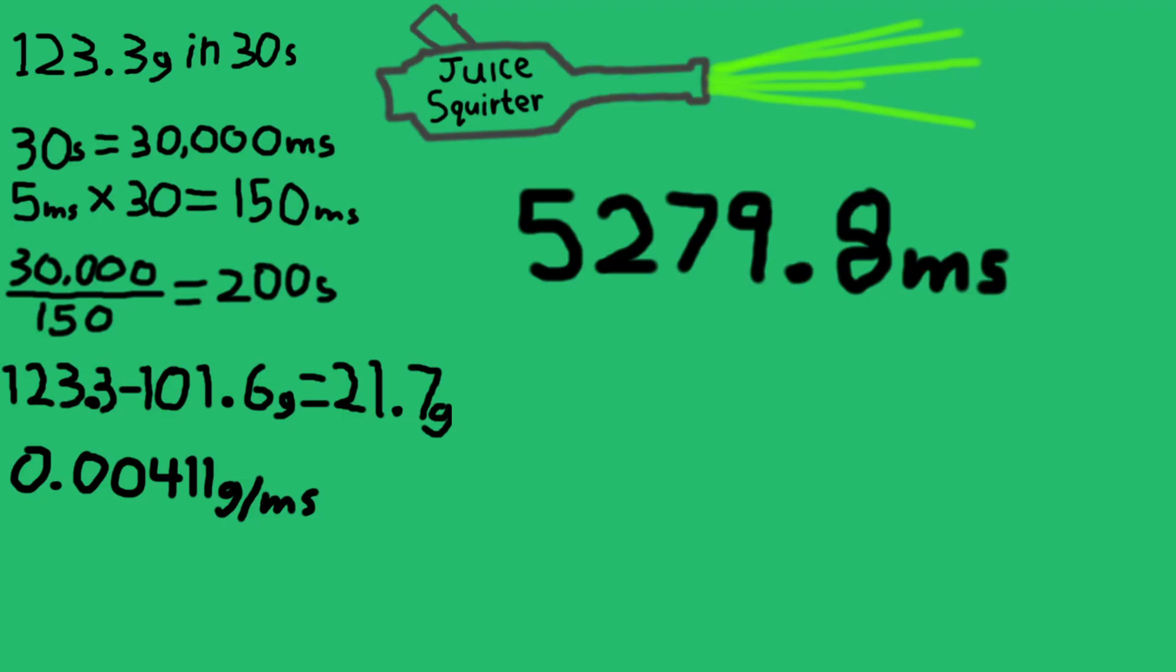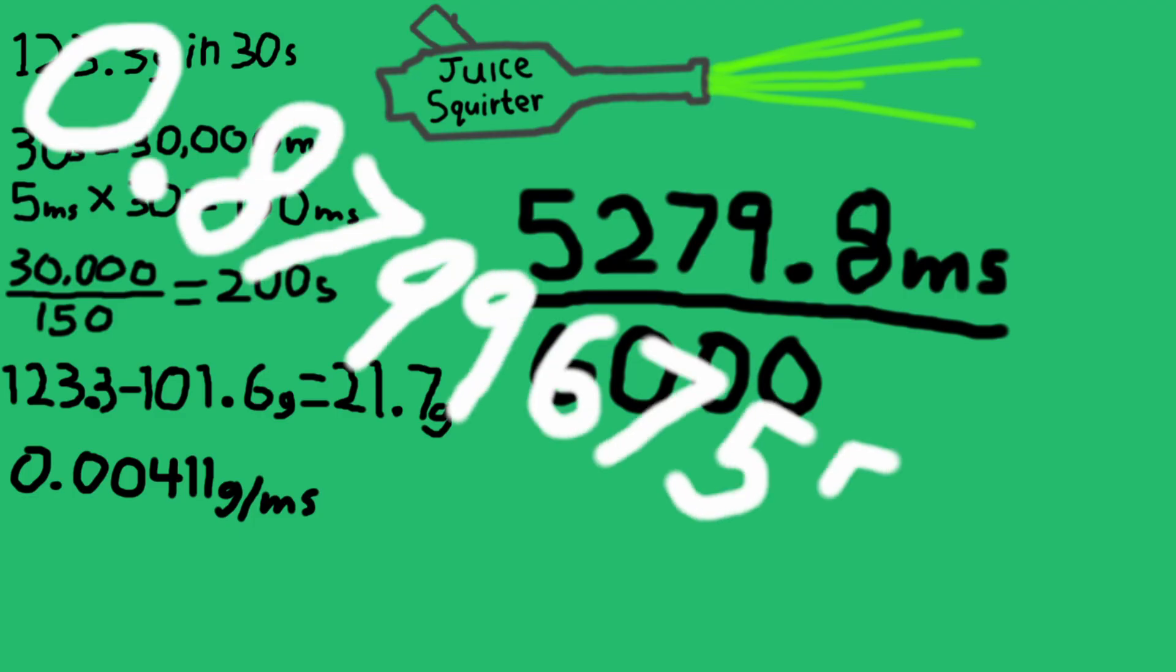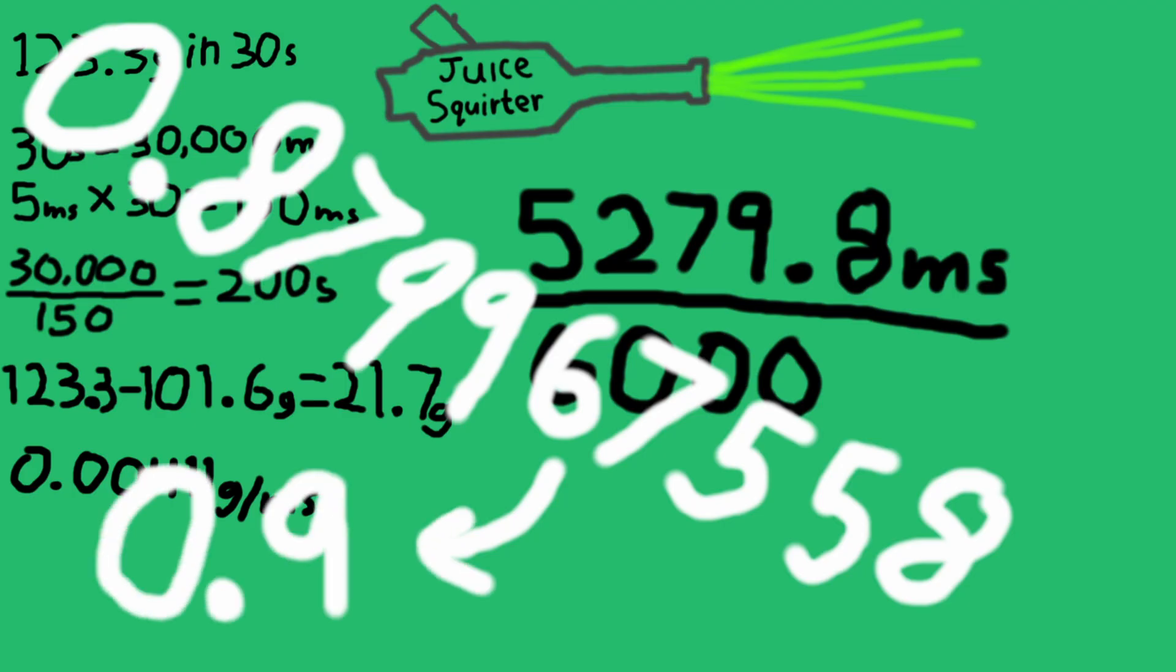This is because when we did our pulsed injector test, we pulsed our injector approximately 6,000 times. So, we need to divide this number by 6,000, which at long last will give us our actual real injector dead time of 0.879967558, which rounds to 0.9 milliseconds. Now,